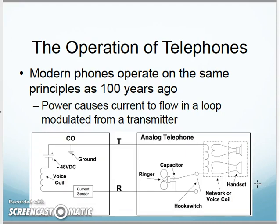The power causes current to flow in a loop modulated for a transmitter. Here's roughly a schematic from the CO: those two wires—one is the tip, the other is the ring—powered to the phone at your house. The phone company actually powers the phone for you. The idea being, if you zoom back in time, many houses did not have electricity when the phone came along, so the phone company powered your phone for you.